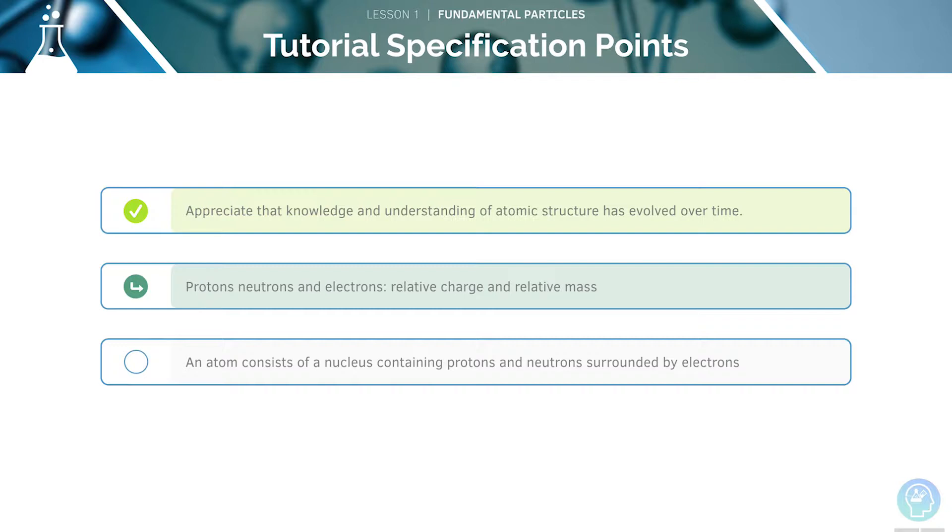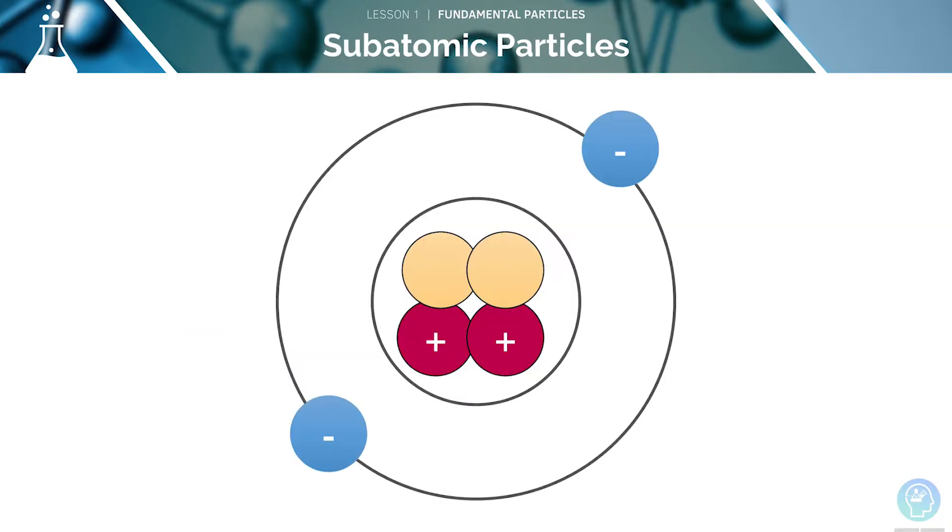We'll now cover the next specification point, which concerns protons, neutrons and electrons. On this atom, we can see various kinds of subatomic particles. We'll identify them one by one.